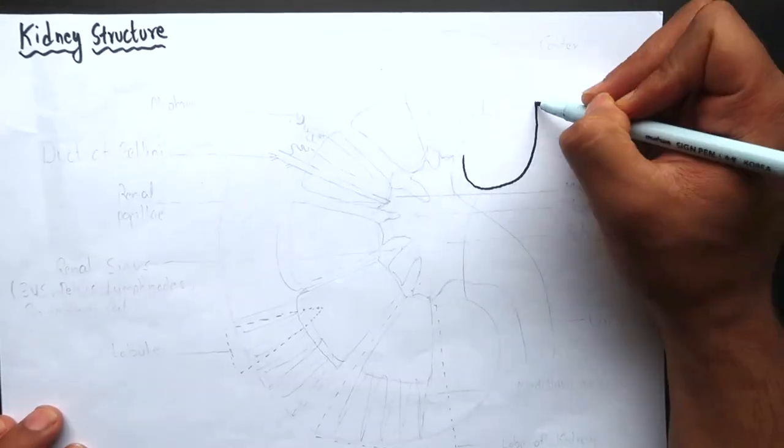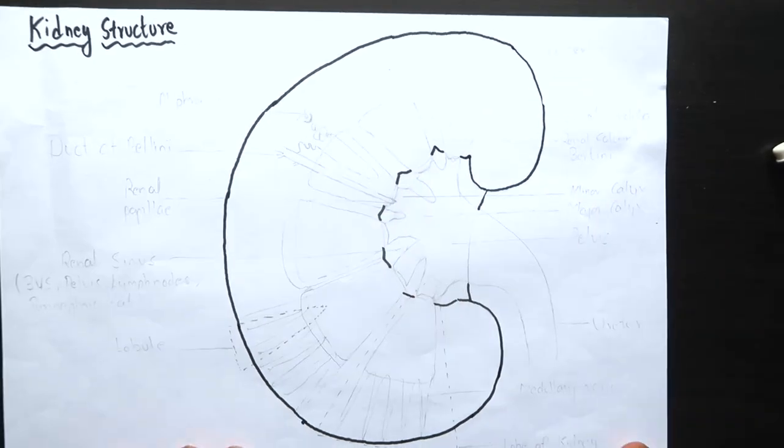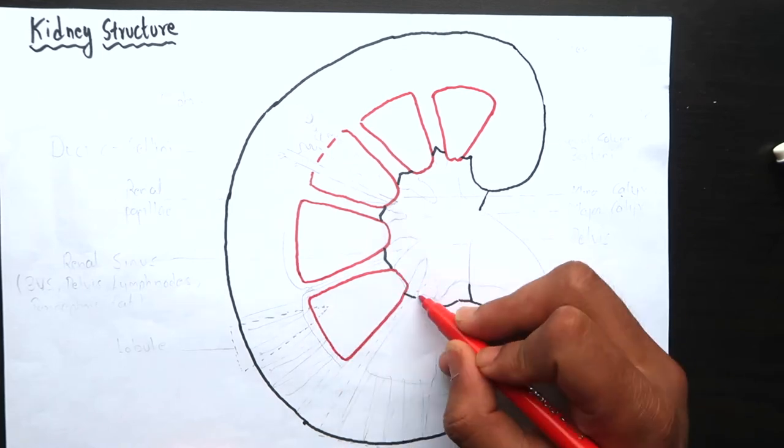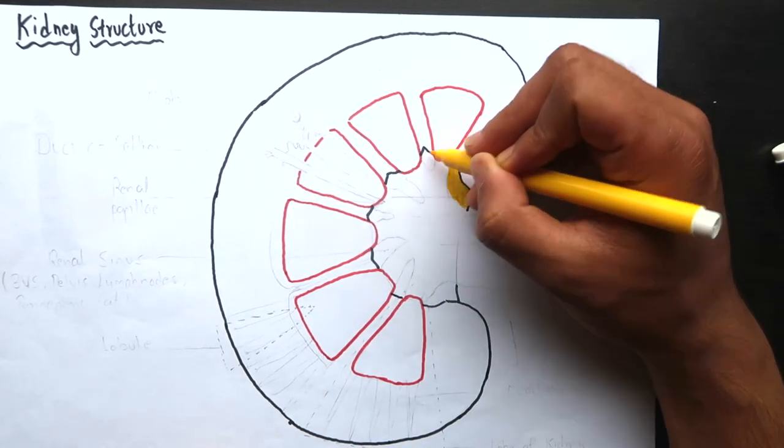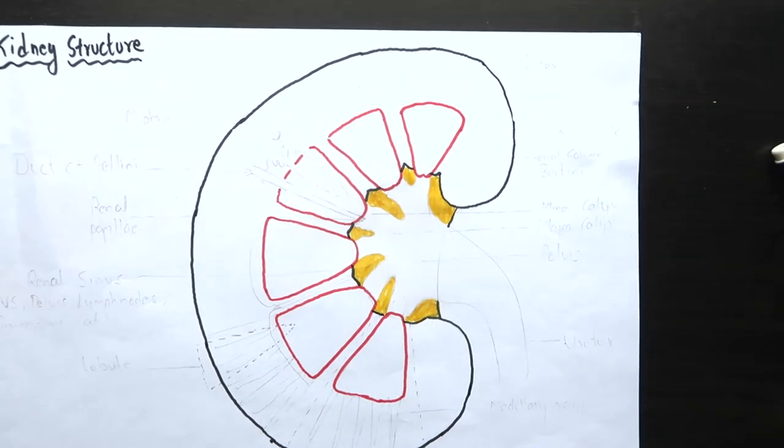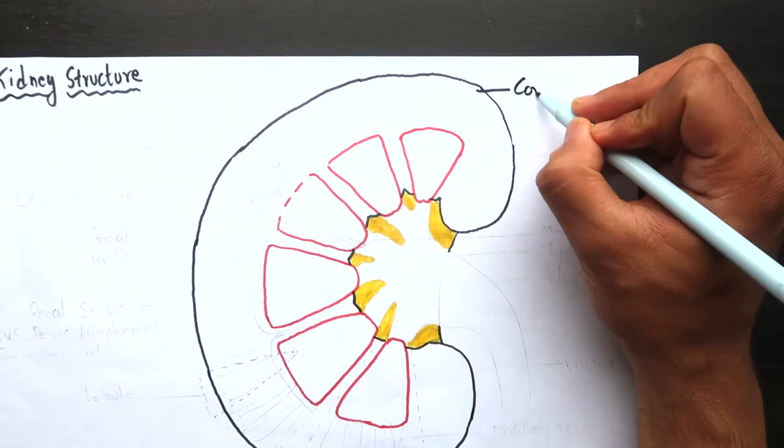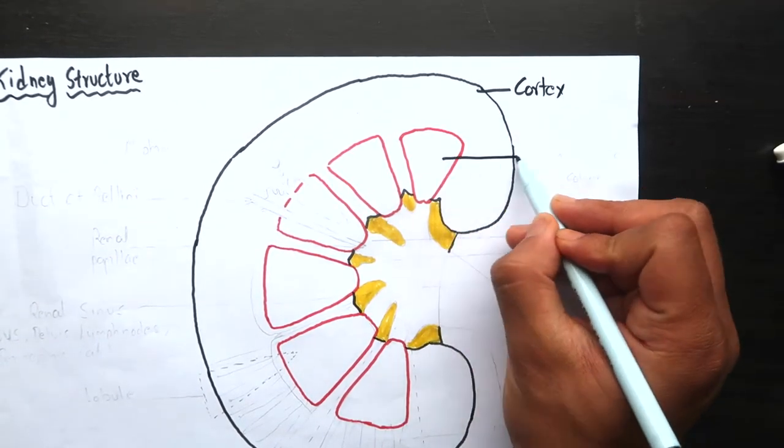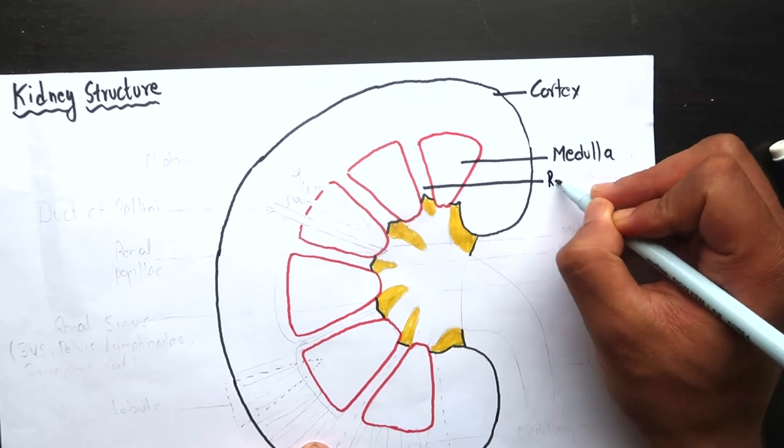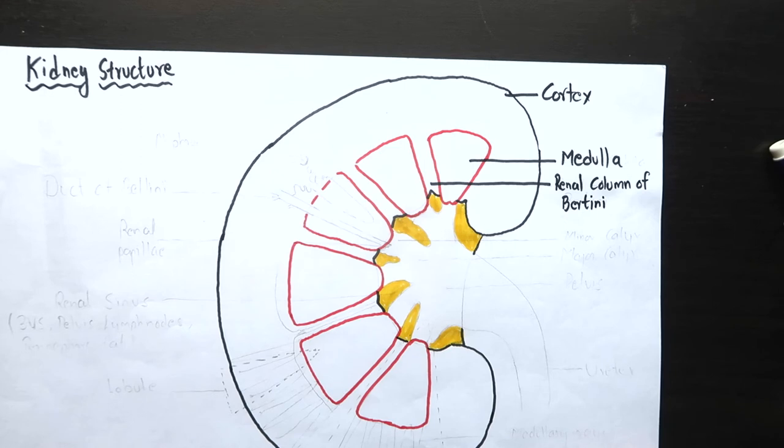Now I'll explain the macroscopic as well as microscopic structure of the kidney. Here, you can see I am drawing the sagittal section of the kidney. On naked eye examination, the kidney consists of outer cortex and inner pyramid shaped medulla. Some cortex invades into the medulla and these are called renal column of Bertini.